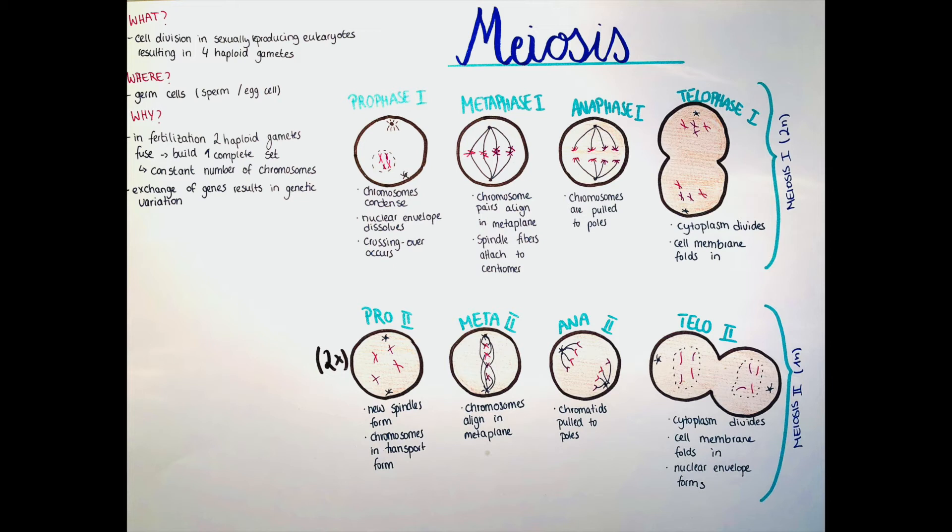Now these two cells will each individually go into meiosis II. They will go in meiosis II at the same time, but they are now two individual cells. So I drew here that the process of meiosis II happens twice. I just didn't draw the second row of cells under it.